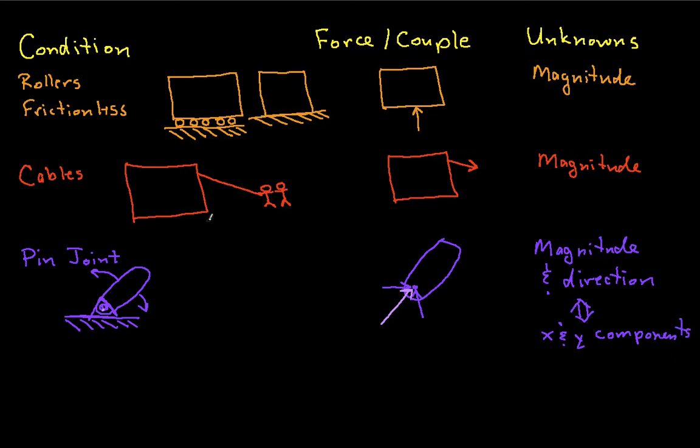Another case that you get essentially the same thing happening in terms of what the free body diagram looks like with some caveats is if I have a surface with friction. So now I've got my gigantic stone. It's resting on the ground. And the ground is not frictionless.